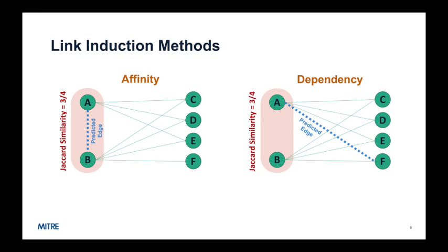Rather than predicting that two similarly behaving nodes will themselves link together, or show affinity to one another, dependency-based induction predicts that two such nodes will link with other nodes in the same way. That is, they will have common dependencies.